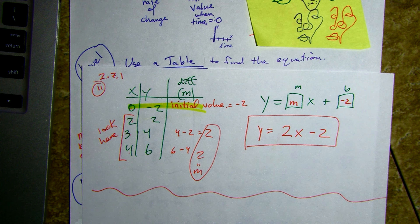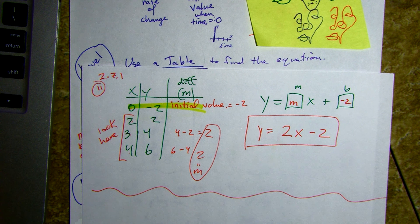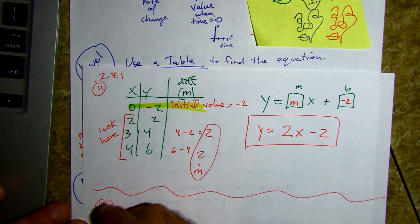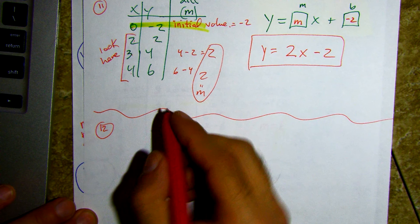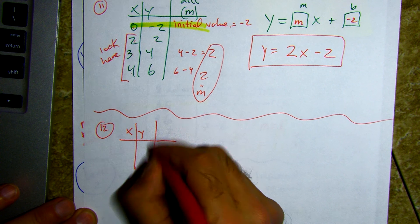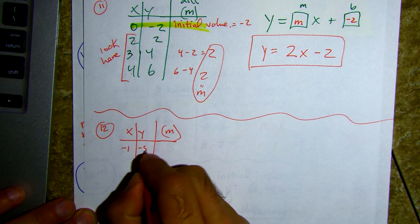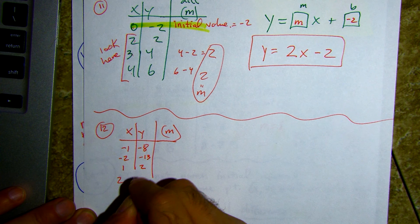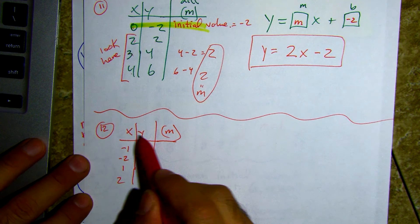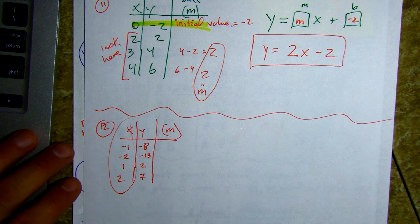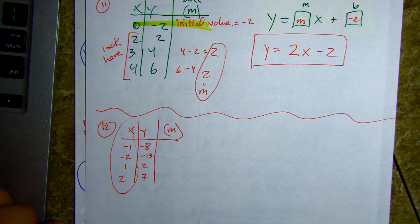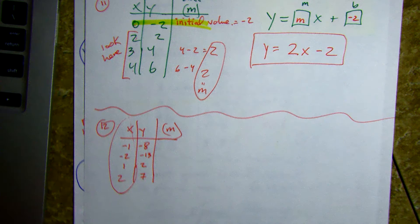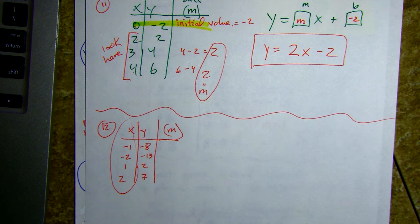Number twelve — very good. Okay, so number twelve has a slightly different situation. Twelve is x and y, we're going to make three columns so we can find our m value: negative one, negative eight; negative two, negative thirteen; one, two; two, seven.